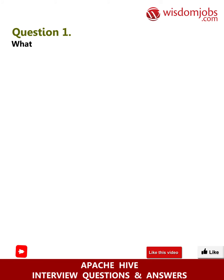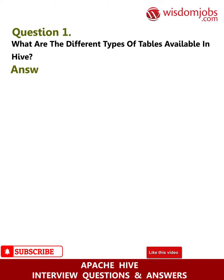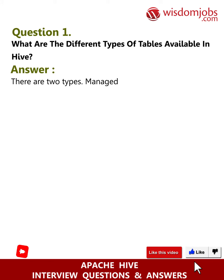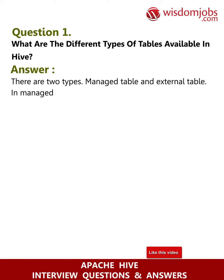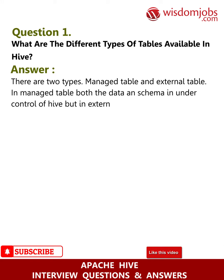Question 1: What are the different types of tables available in Hive? Answer: There are two types — managed table and external table. In a managed table, both the data and schema are under control of Hive, but in an external table, only the schema is under control of Hive.